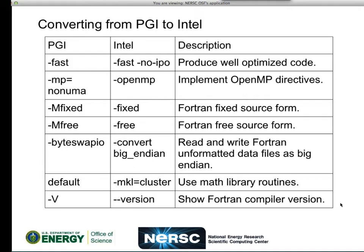Converting from PGI to Intel: these are the flags and their equivalents that people use pretty frequently. The key thing to talk about is what is the recommended flag to produce well-optimized code in general. In PGI it's -fast. For Intel, it's -fast with something additional. This is something I've just discovered in the past couple of days. The best combination produces well-optimized code at runtime while minimizing compile time: -fast but with -no-ipo added. If you just do -fast, there are problems with it that I will talk about.